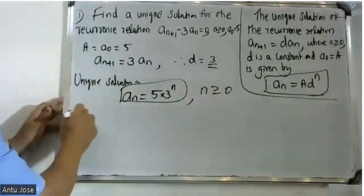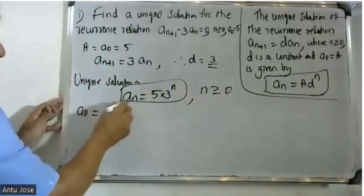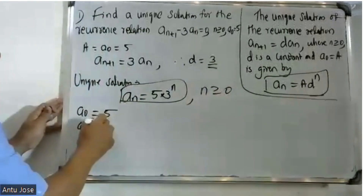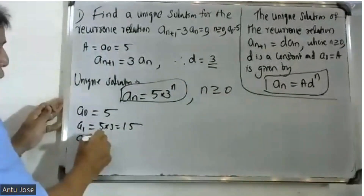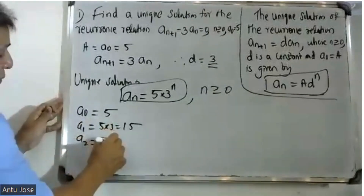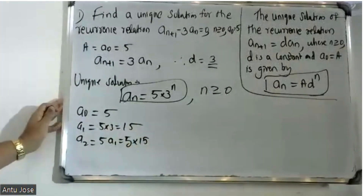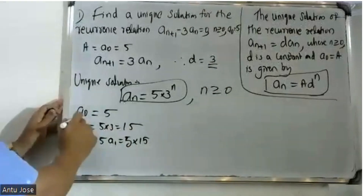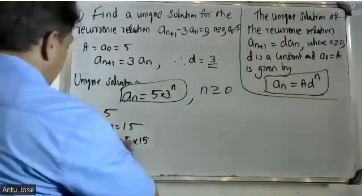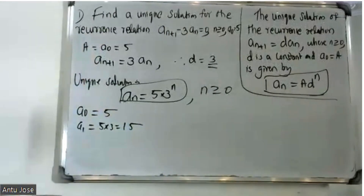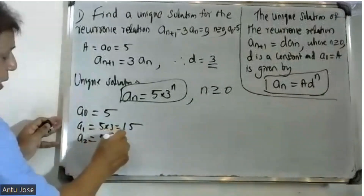Verifying: when n = 0, a_0 = 5; when n = 1, a_1 = 5 * 3 = 15; when n = 2, a_2 = 5 * 3^2 = 45.